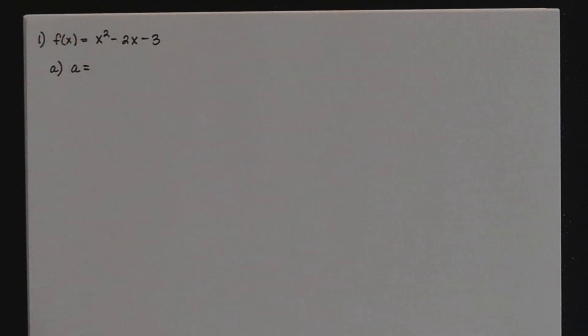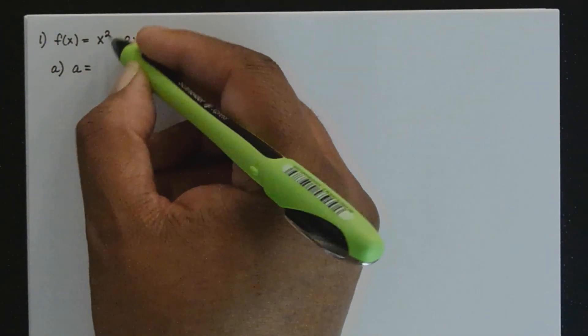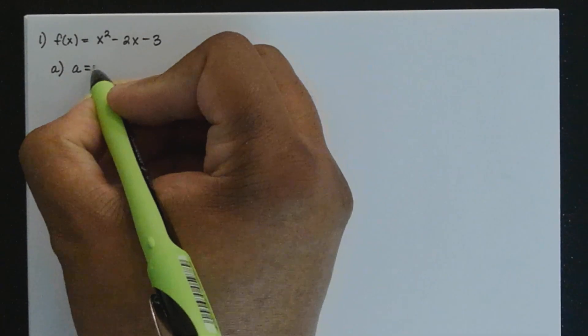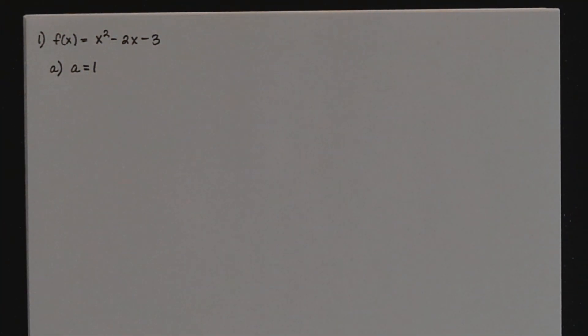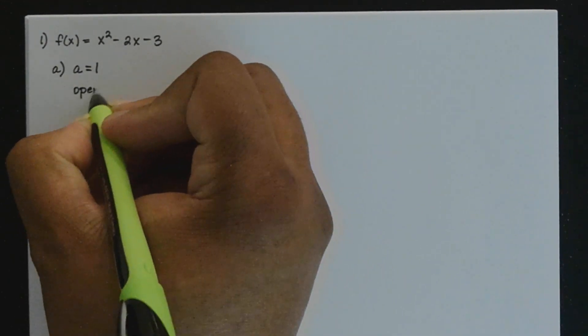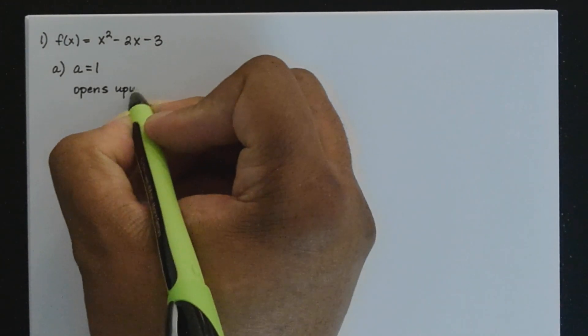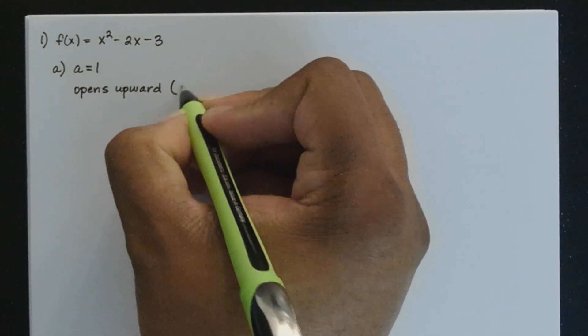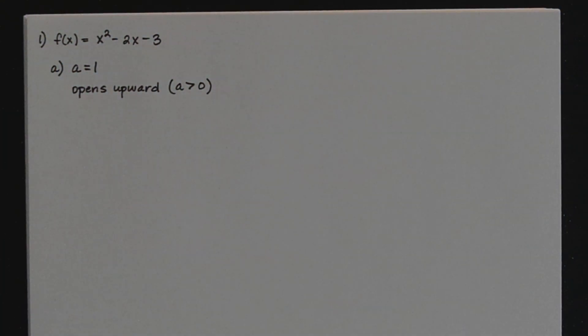To do that, you have to identify what A is — that's going to be the coefficient of your x-squared term. Here's x-squared; its coefficient is the understood 1. Now, if A is positive, that tells you the parabola opens upward, or if it's negative, the parabola opens downward. So in this case, your A is positive, and because of that your parabola will be opening upward, because A is greater than zero. That's part A.